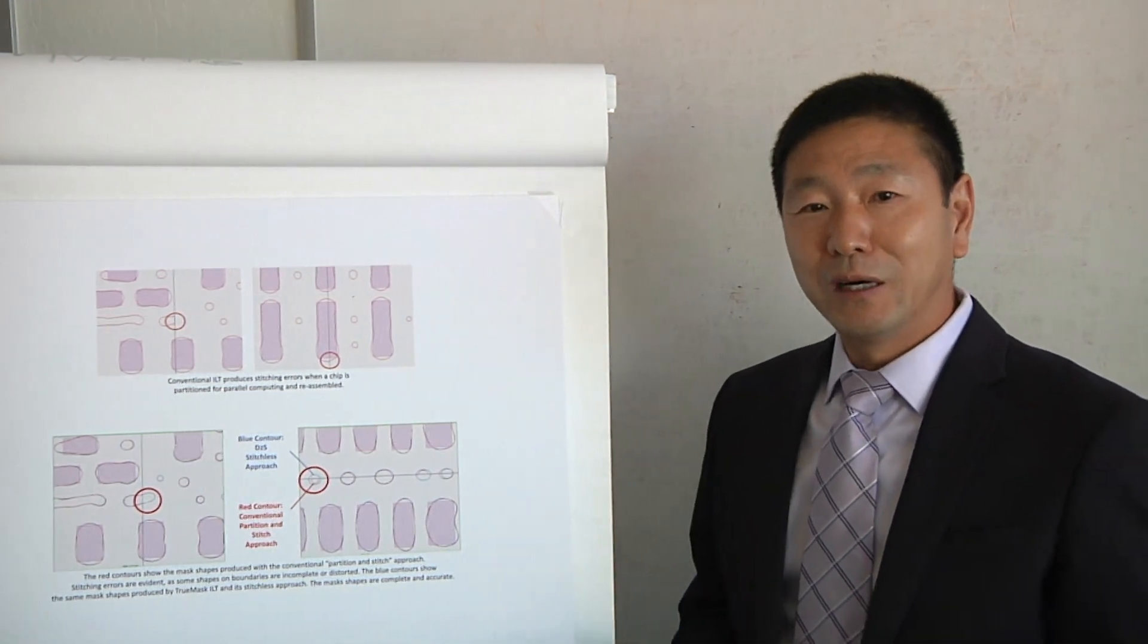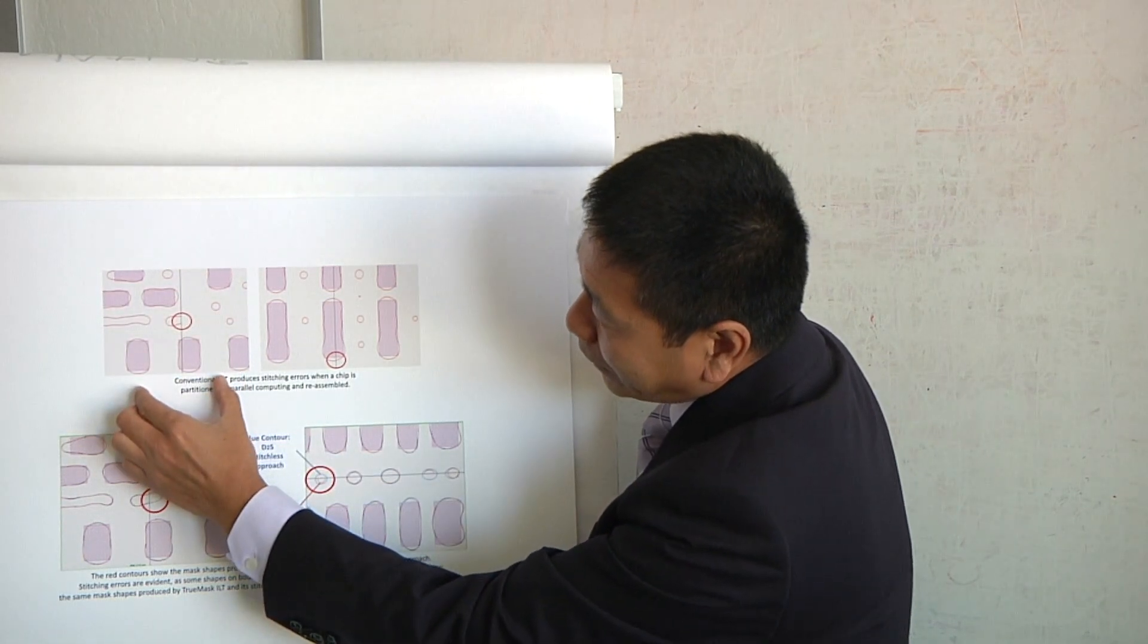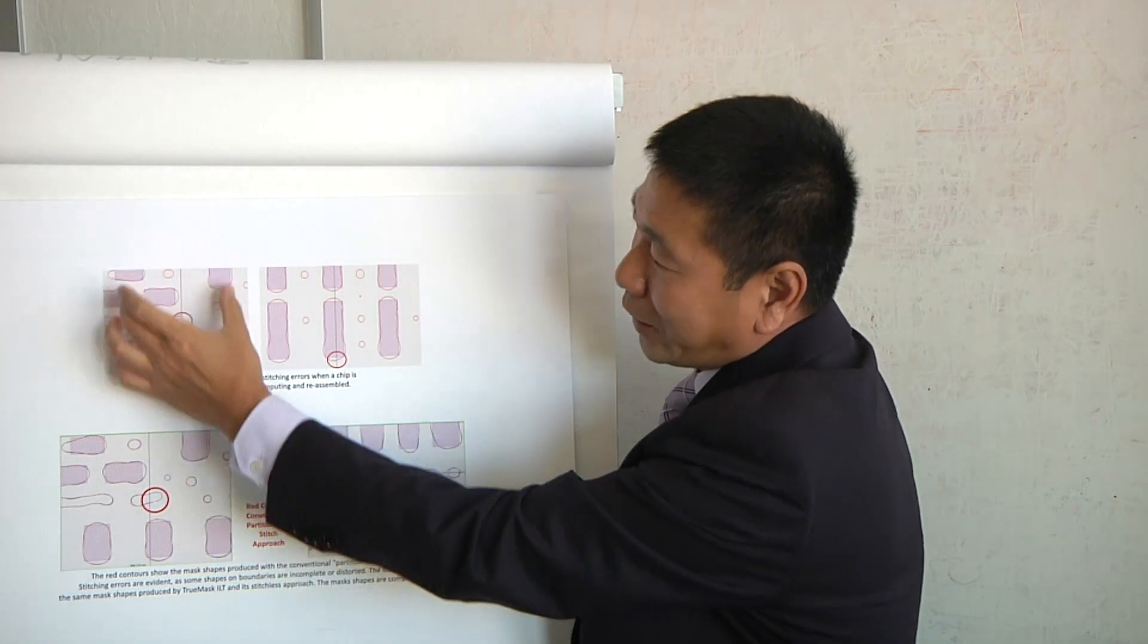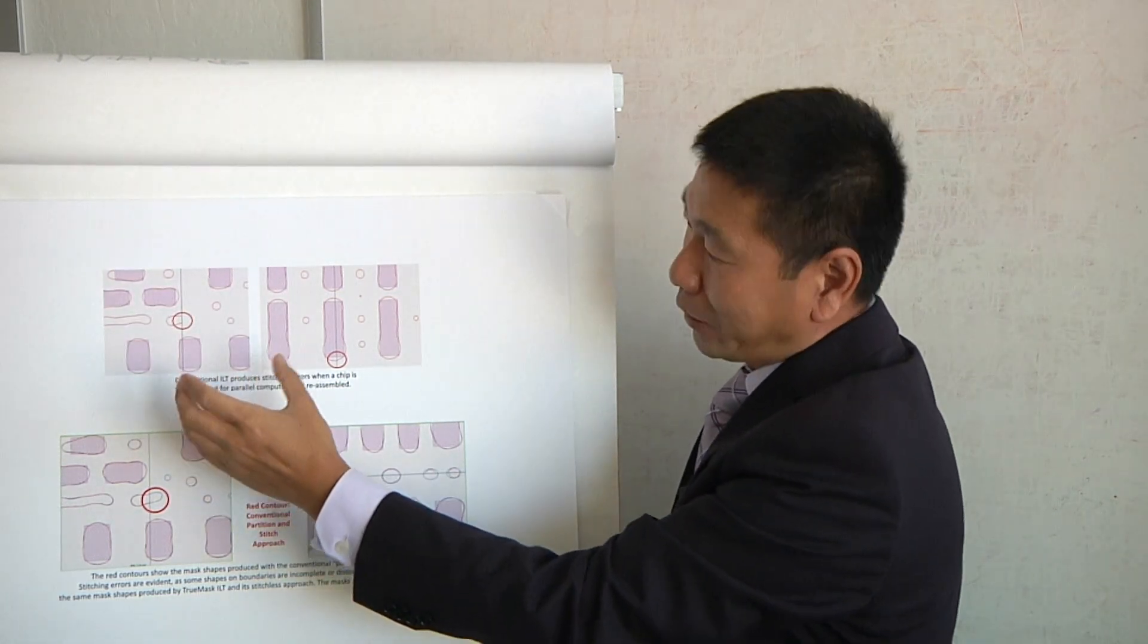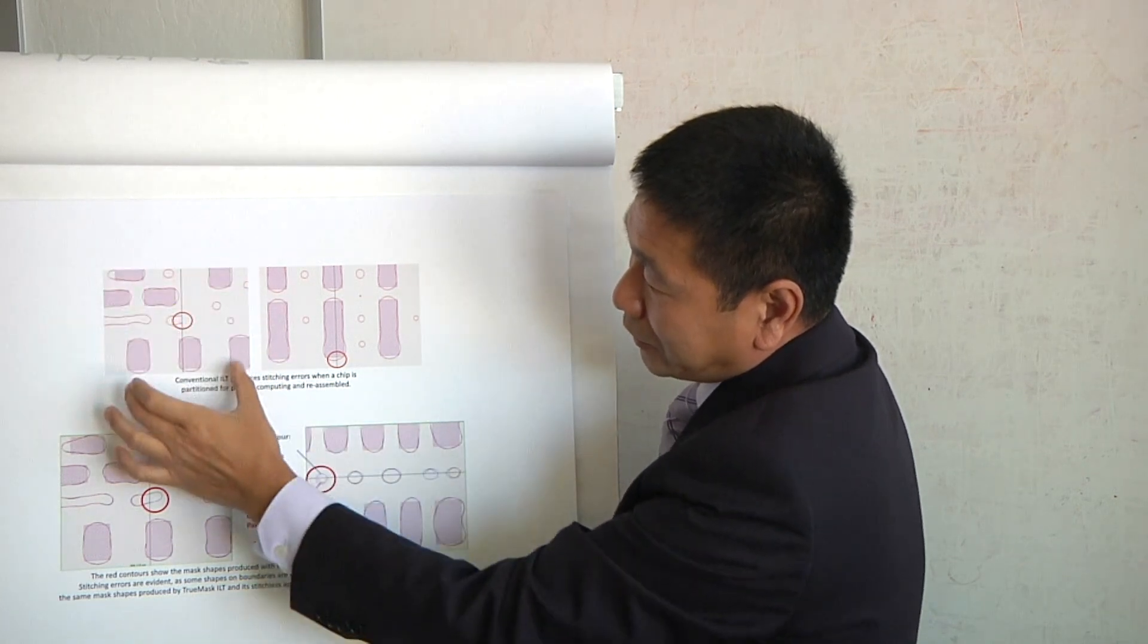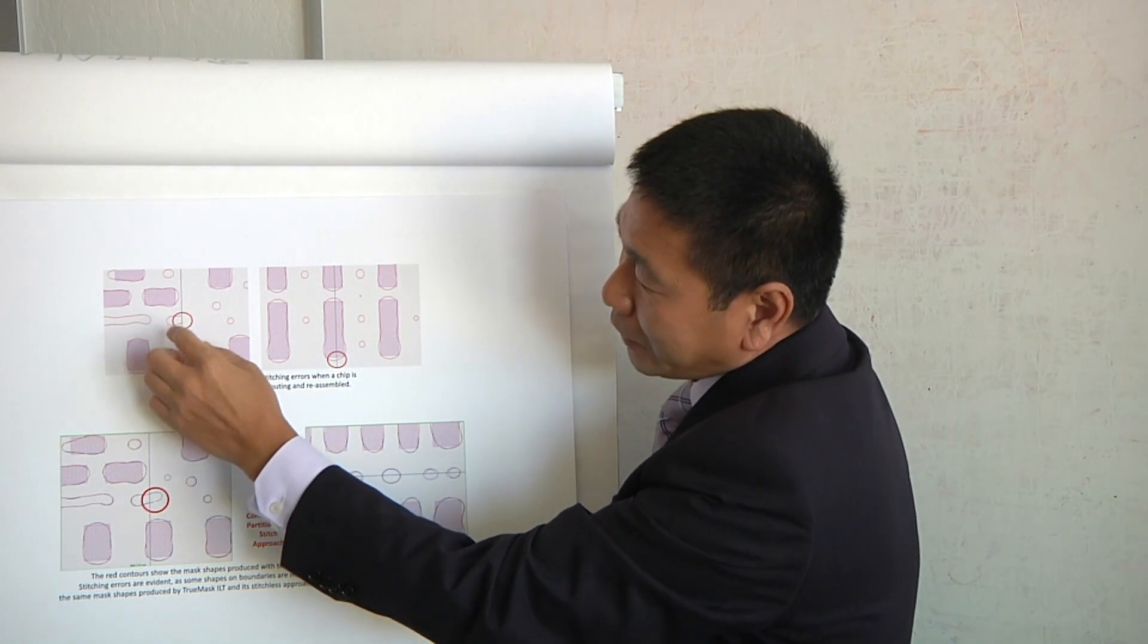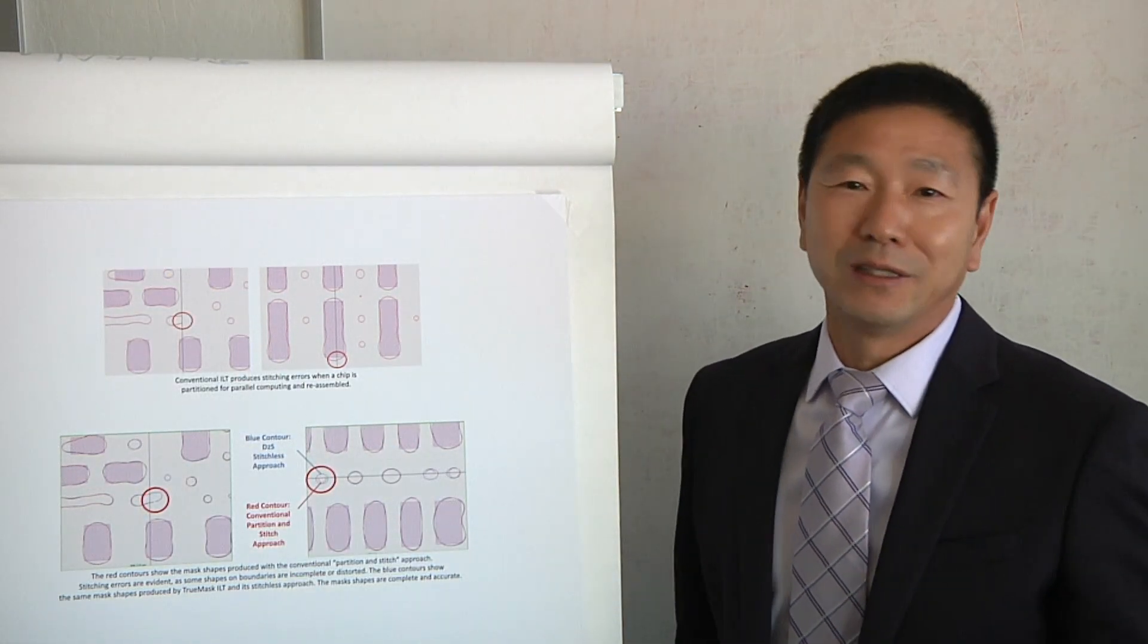And the way you fix them is you actually take this whole region and redo ILT, right? So that will fix the problem at this stitching boundary. But as you can imagine, well firstly, that takes a really long time because each partition is relatively small. So this area that you have to redo optimization is quite large. And secondly, when you redo this, you actually create additional stitching boundaries. So the problem is never end.